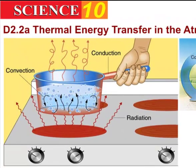First off we need to back up a little bit and do some basic science. There are three major ways in which thermal energy can be transferred. One is through conduction, and that's through actual touch. Here we see a person holding the handle of a pot, and if the handle is not insulated, heat is going to be transferred from the pot to this person's hand.